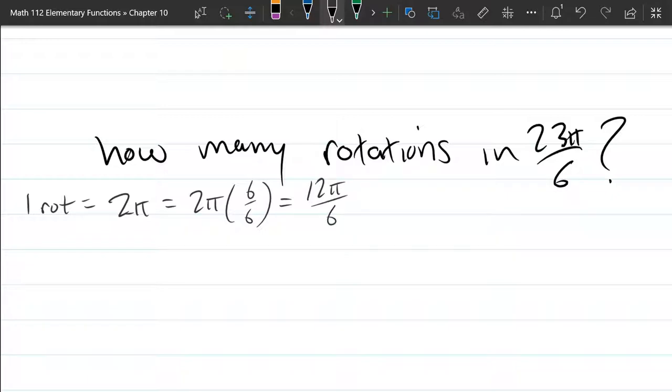If you knew that right away, you can just write down. I'm thinking about rotations as 12π over 6. So how many 12π over 6's are hiding in 23π over 6? Well certainly one, maybe two.